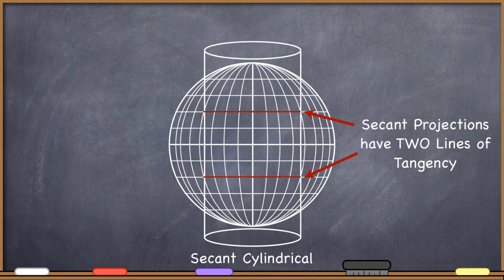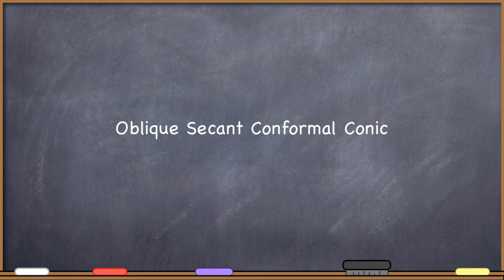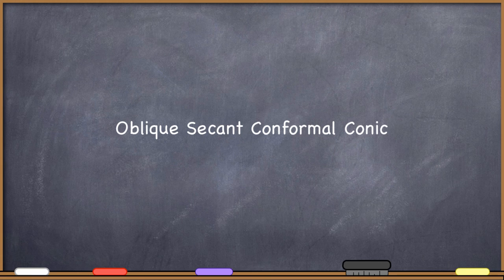What happens if you make a secant planar projection? Well, instead of having that plane touch the earth at one point, you can imagine pushing the plane down through the reference globe, and a secant planar projection ends up having an entire line of tangency. So now when we name projections, we give them names like this: 'oblique secant conformal conic.' What I want you to do is find out what that must mean. Go through each of these words — what it means for something to be oblique, what it means for the projection to be secant, what does conformal mean, and what does conic mean. That actually tells you a tremendous amount about what kind of information this projection is going to preserve and how this particular projection is constructed. You see projections written out this way all the time, and if you understand what all the words mean, you can know a lot about projections.